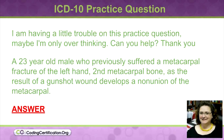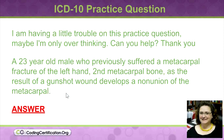You would be able to code for a nonunion — there's literally a code for nonunion. Then at the end of the code, remember we were talking about letters at the front; now you would have letters at the end that say whether it was the initial encounter, a subsequent visit, or a sequela, meaning a late effect.